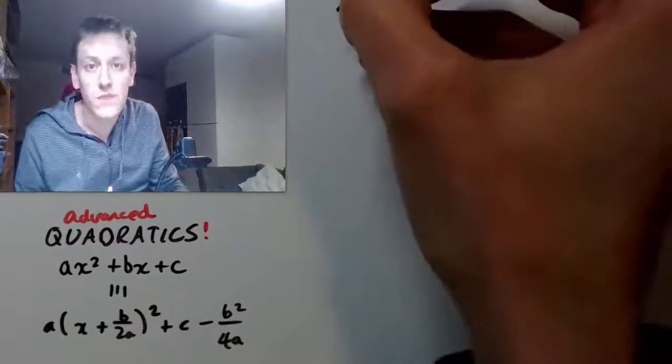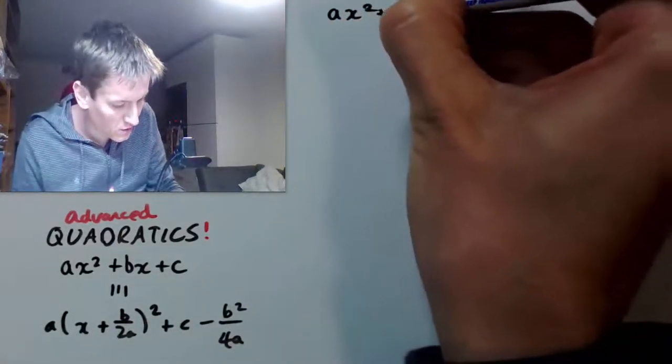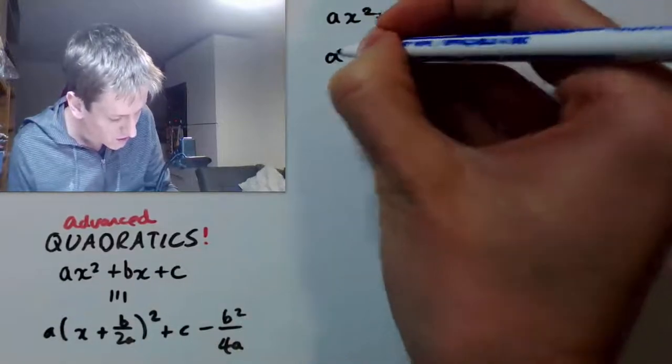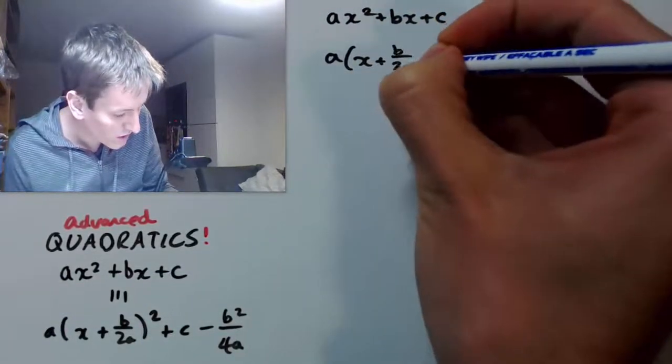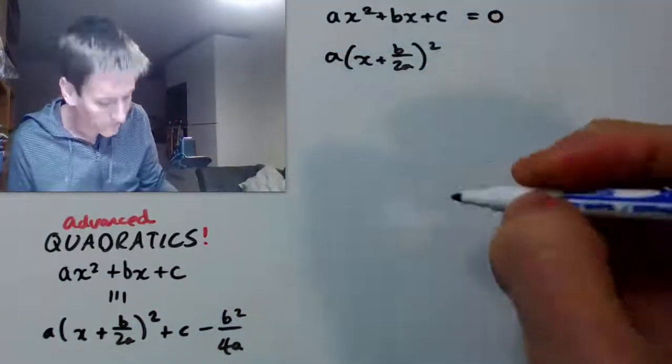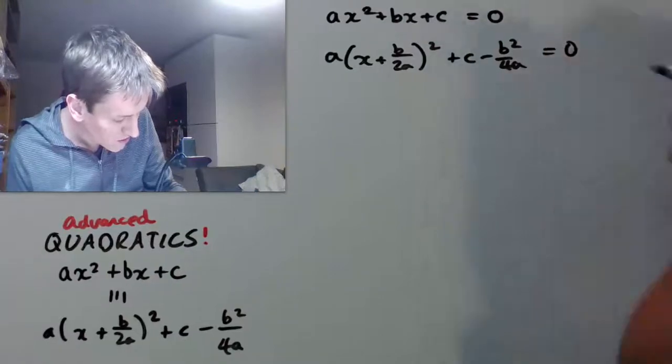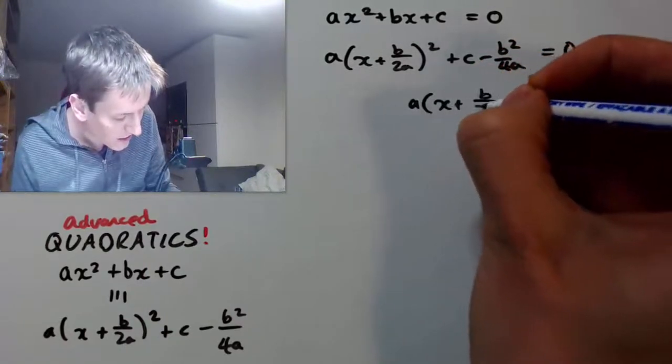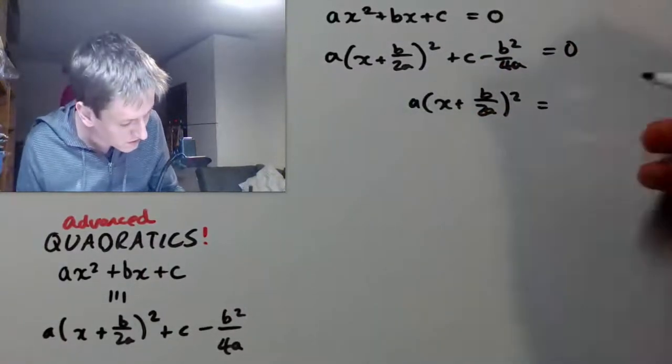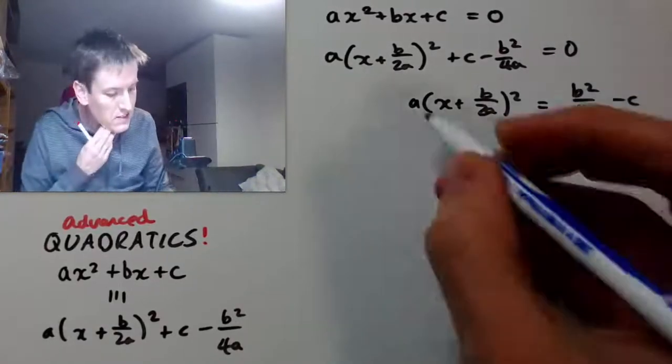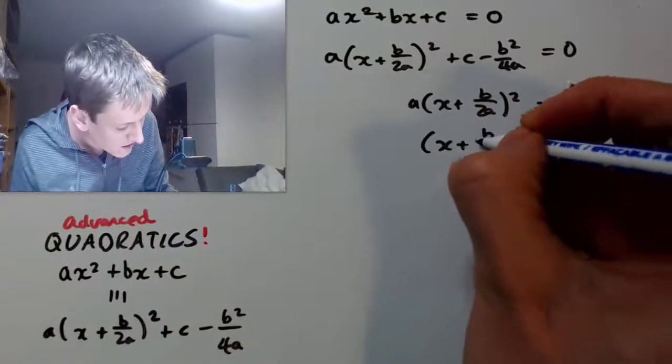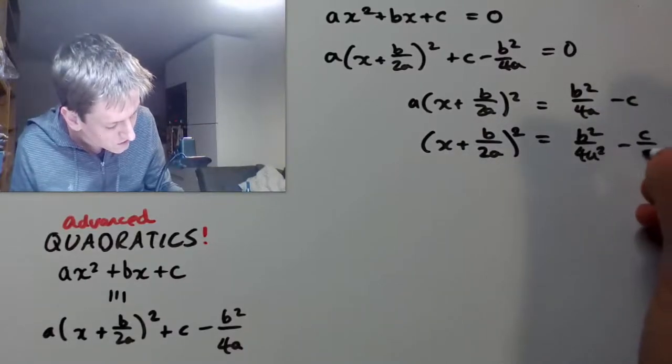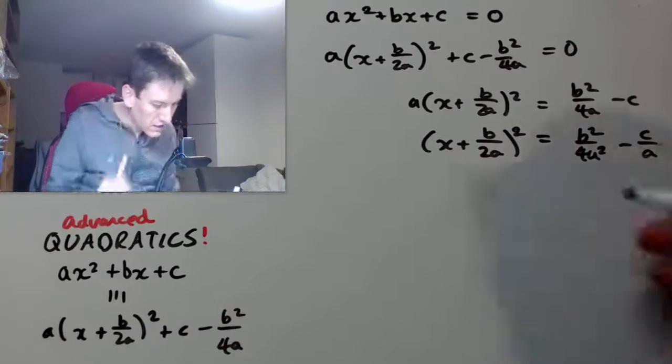In particular, notice that if I've got my quadratic to start off with and I think of it as an equation, it allows us immediately to derive the quadratic formula in our usual way. So if I write my quadratic in this completed square form, I can now move this constant term to the right hand side and get a times x plus b over 2a squared equals b squared over 4a minus c. I can divide by a and get x plus b over 2a squared equals b squared over 4a squared minus c over a.